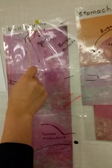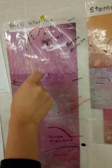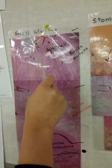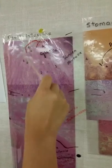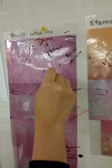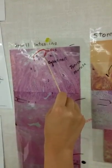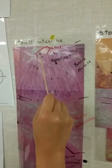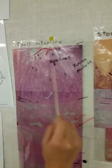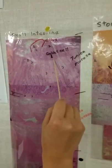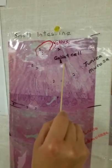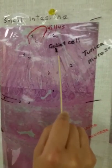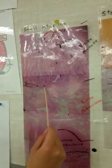This is the simple columnar epithelial tissue, non-ciliated. This part here is the villus. This is the connective tissue. This is the goblet cell — goblet cells are these little circles here. Muscularis mucosa would be here.